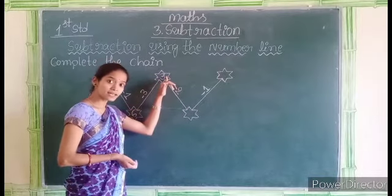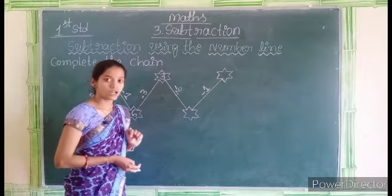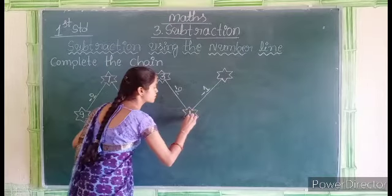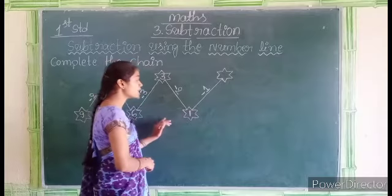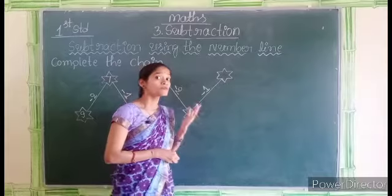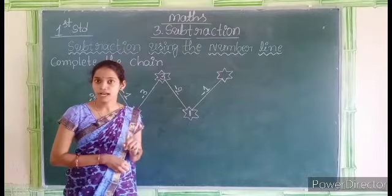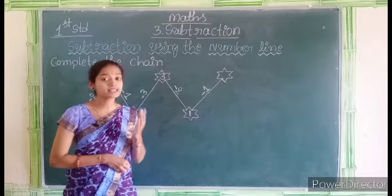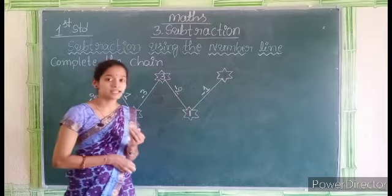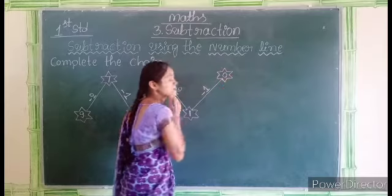Then we have to subtract 2 from 3. 3 minus 2 is 1; 1 should be written in this blank. And now we have to subtract 1 from 1. 1 minus 1 is 0; 0 should be written in this blank. Finally, we get 0.